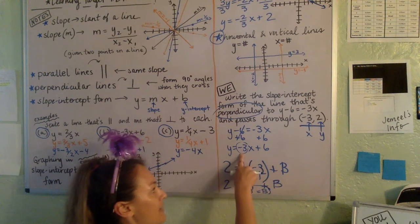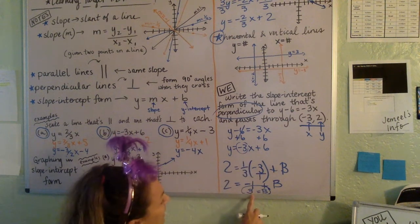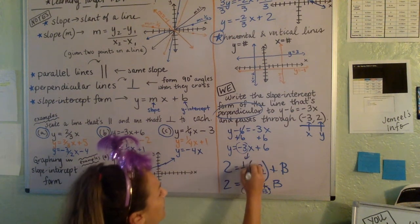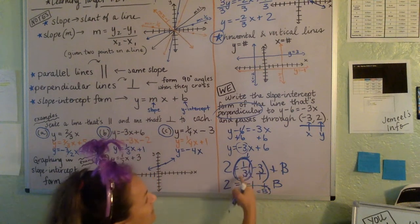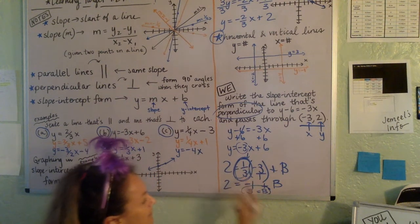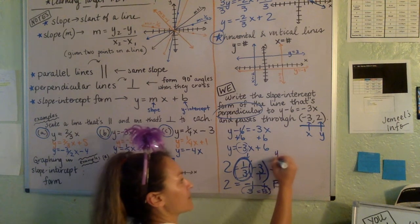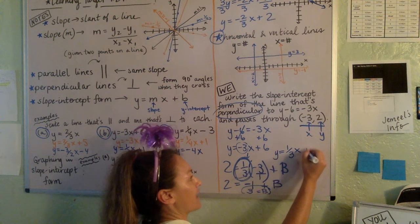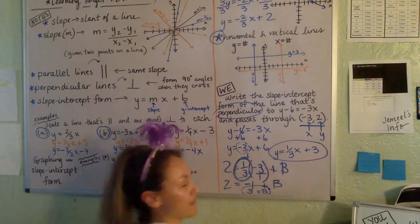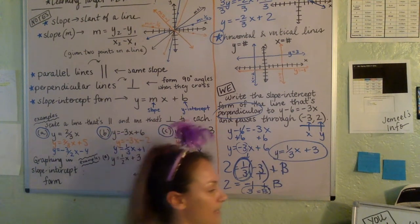And so we have the M we want. Oh, I'm sorry. Here's our M that we want because we wanted it to be perpendicular. We have the M we want. We have the B we want. And so now let's go ahead and write out the equation. 1 third X plus 3.